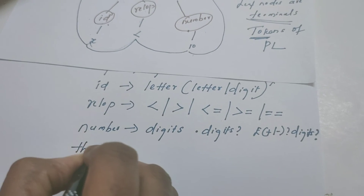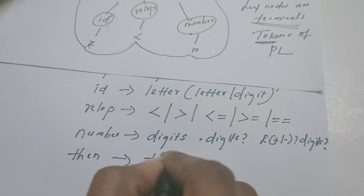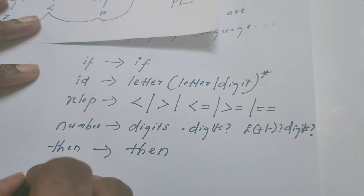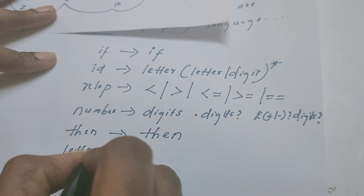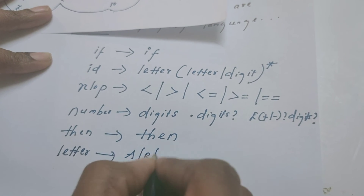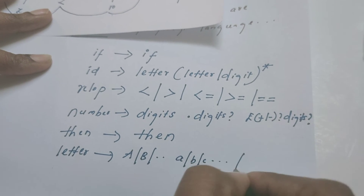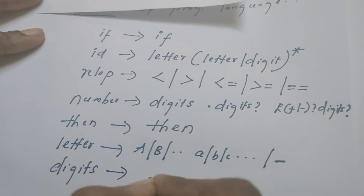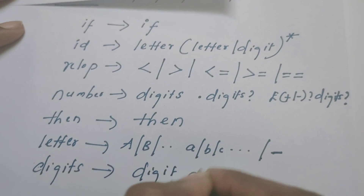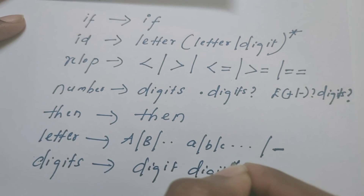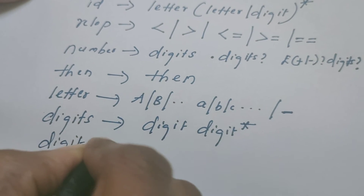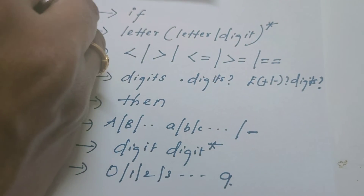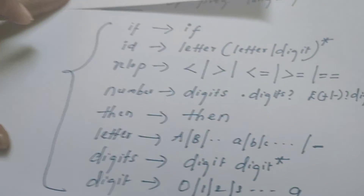'then' is a terminal and leaf node — it is a keyword containing the four letters t, h, e, n. We can further define what a letter is: letter includes capital A through Z, small a through z, and also underscore. We can further define digits as one or more digits using the Kleene star, and a digit is defined as 0 | 1 | 2 | ... | 9. This is the regular definition for all the tokens.